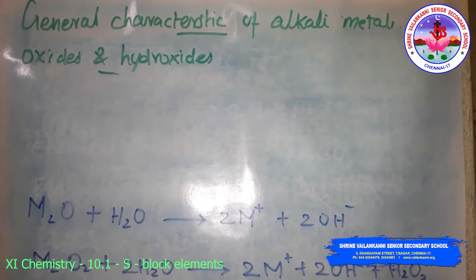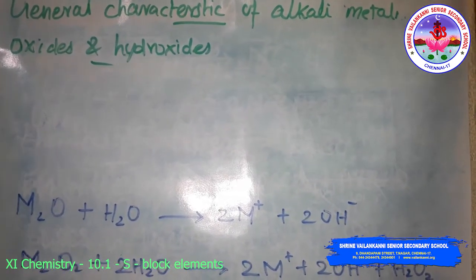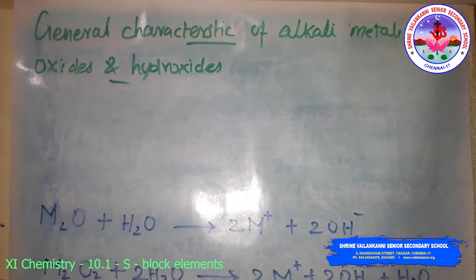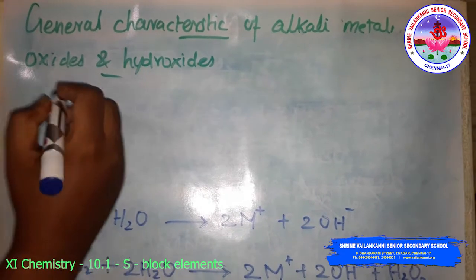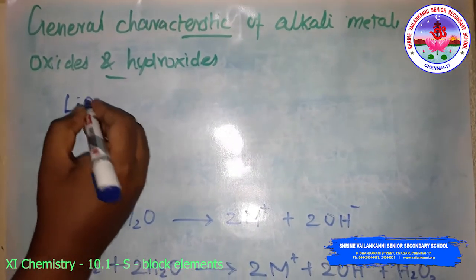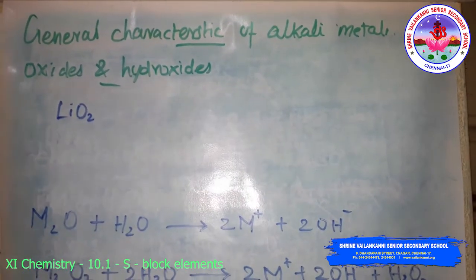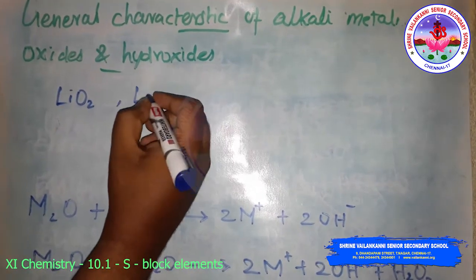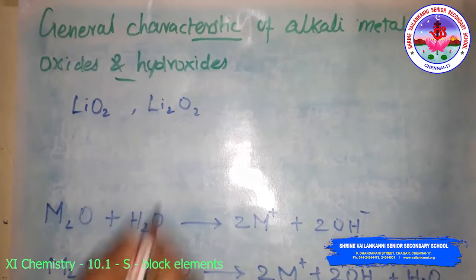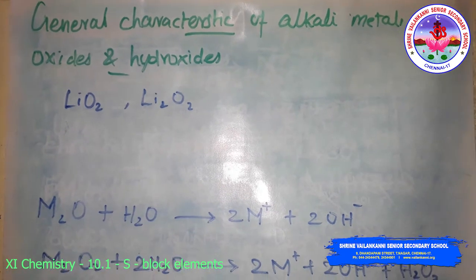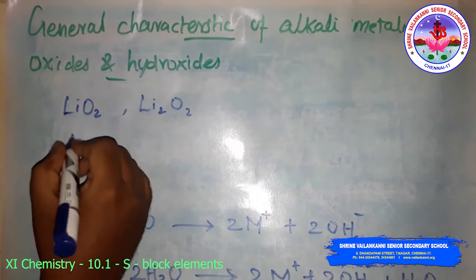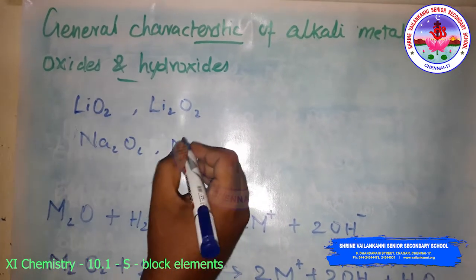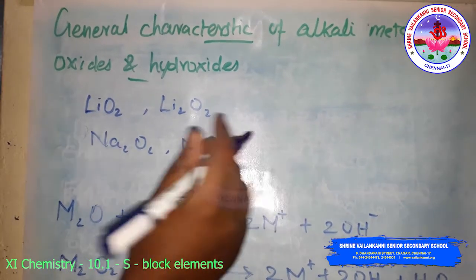We will see the oxides and hydroxides formed during combustion in excess air. Lithium forms the oxide Li2O, and some peroxide is also possible, that is Li2O2, lithium peroxide. Sodium usually forms sodium peroxide, and sometimes superoxide NaO2 is also possible.